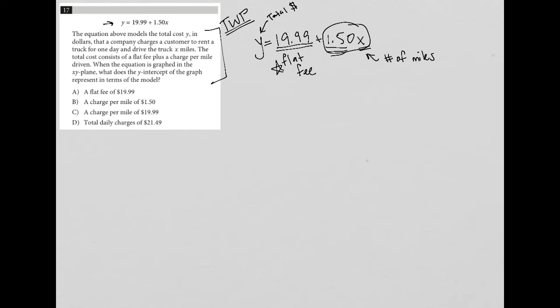When the equation is graphed in the xy plane, what does the y-intercept of the graph represent in terms of the model? Well, usually when I see the word 'graphed' in a question, I think maybe I should draw a graph. But in this case, the question is just asking for the meaning of the y-intercept.